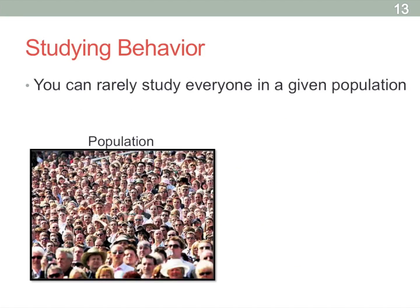Once you've sort of figured that out, then you have to decide what is the population you're interested in. Is it basically everyone? If it's a human universal, then you can oftentimes just study it in college samples. Or is it something that might be unique to specific groups?